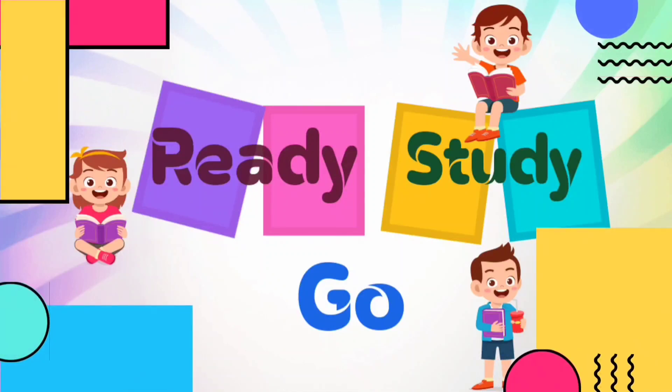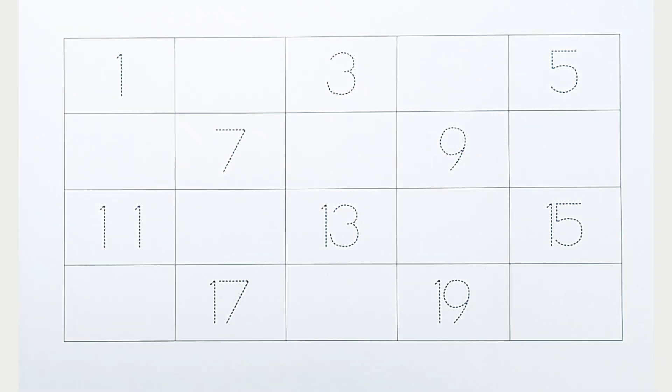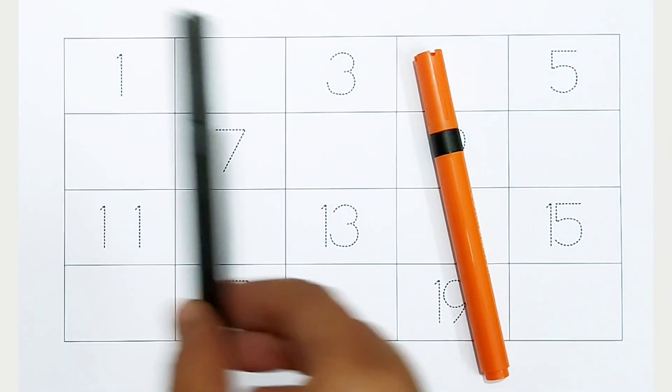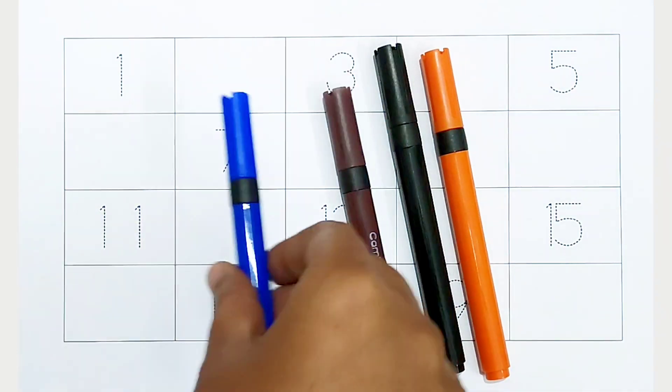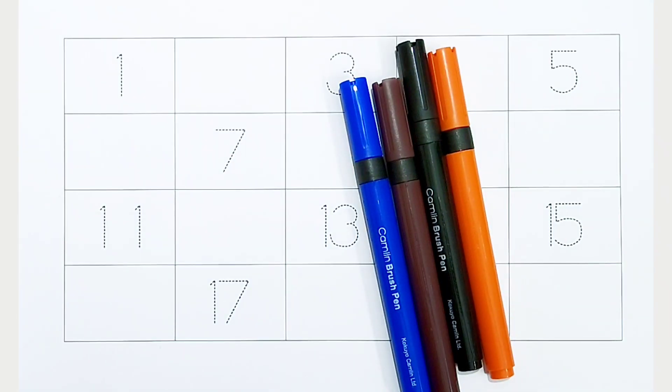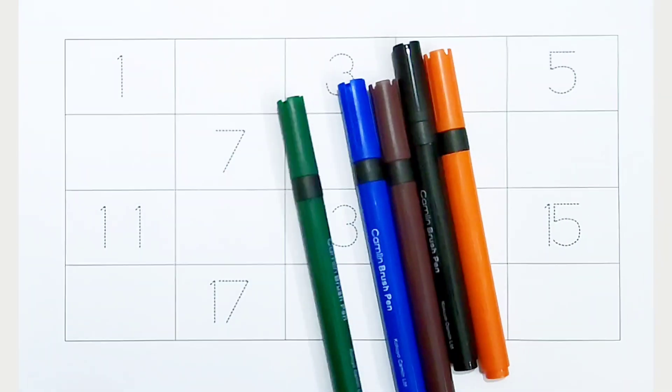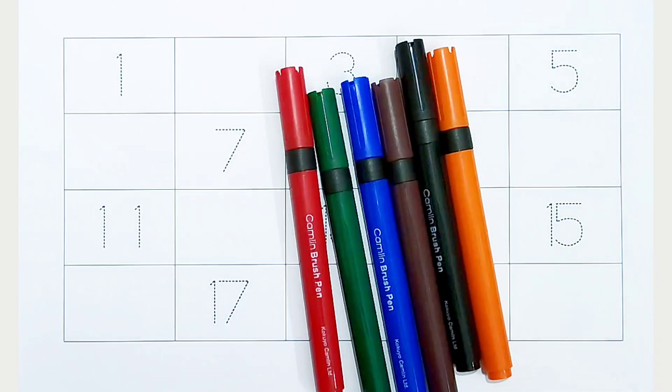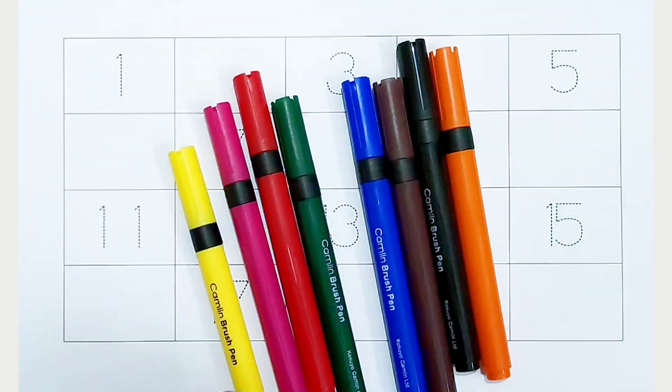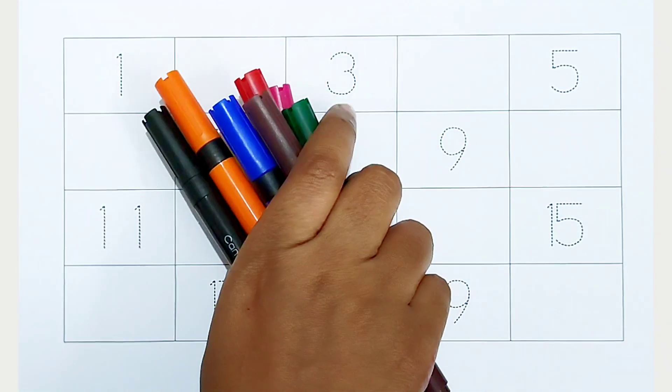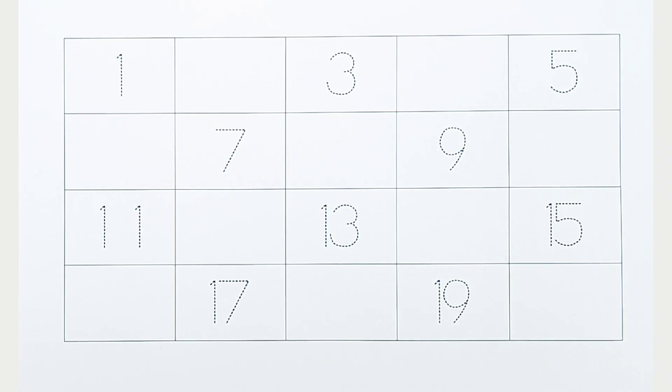Ready, study, go! Orange color, black color, brown color, blue color, green color, red color, pink color, yellow color. Hi kids, today we can learn the numbers from 1 to 20.